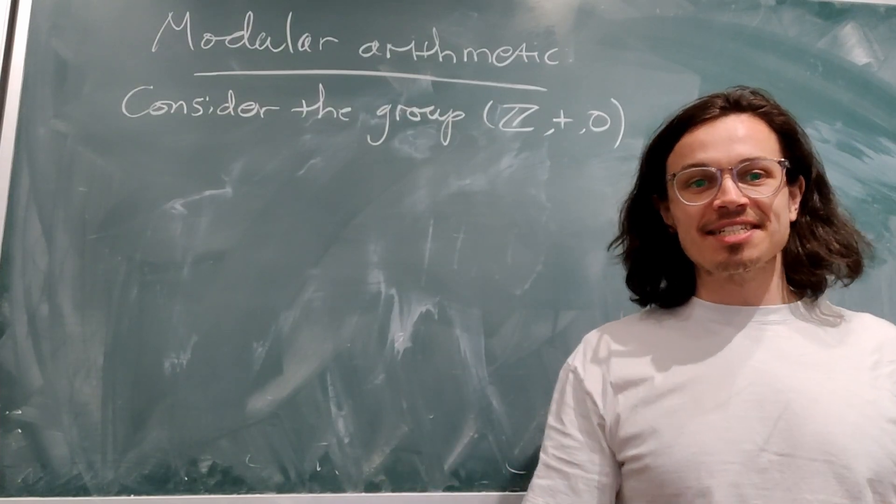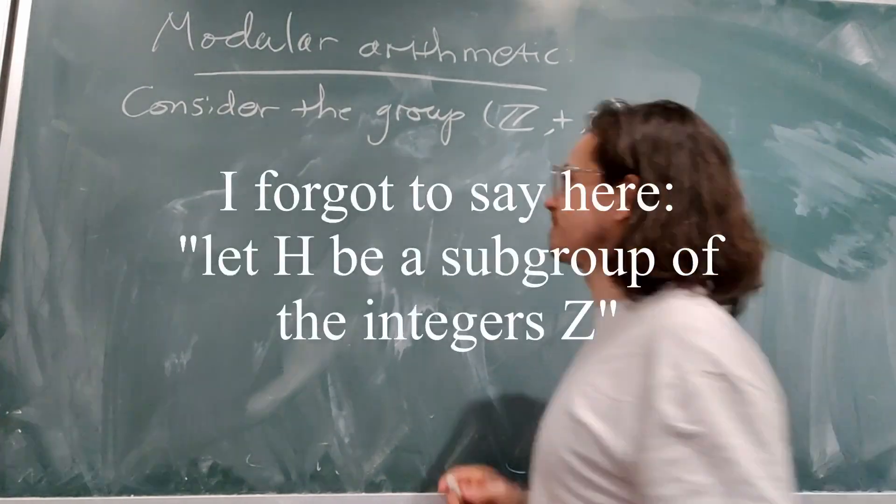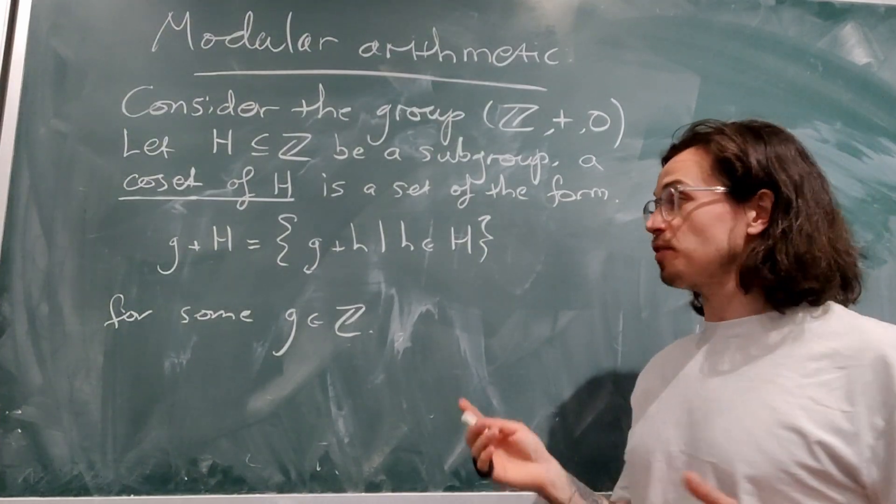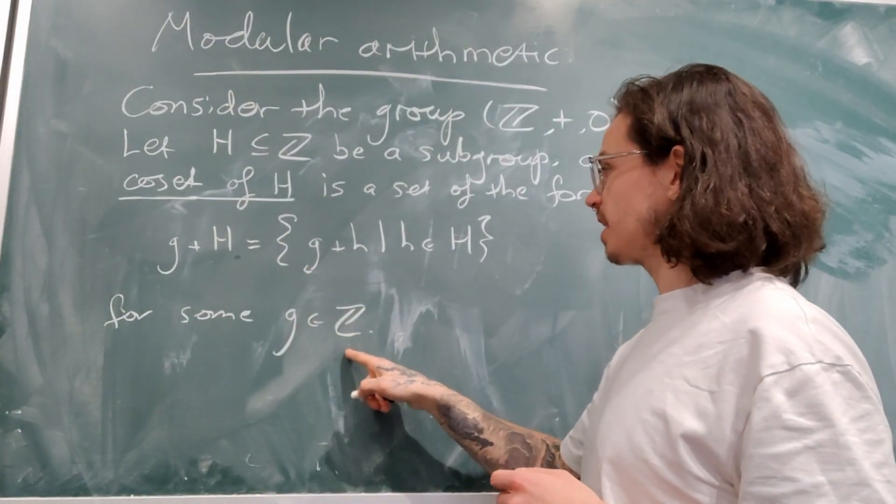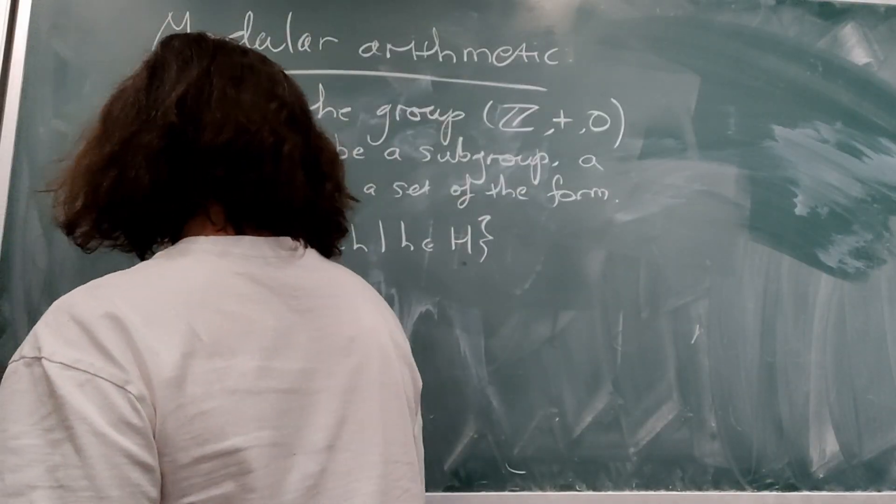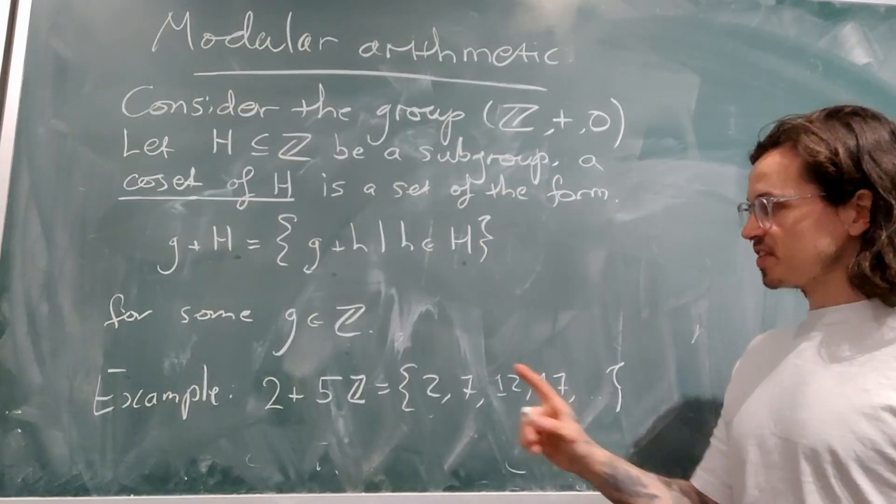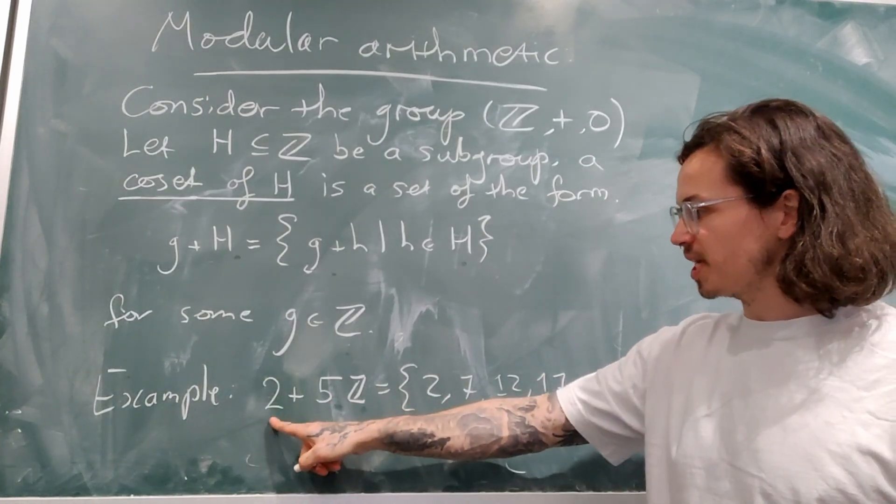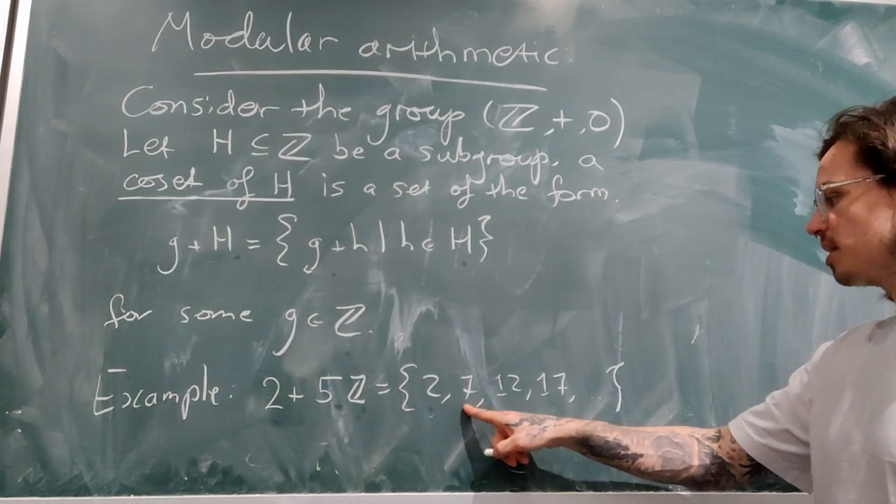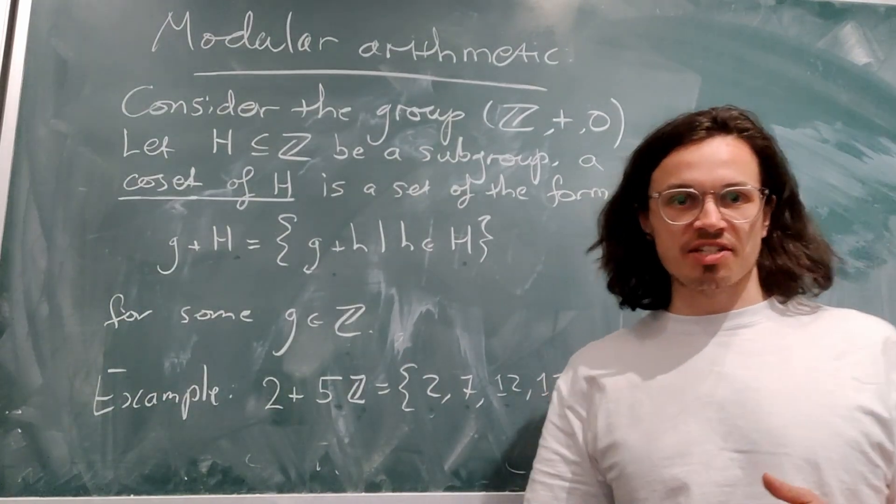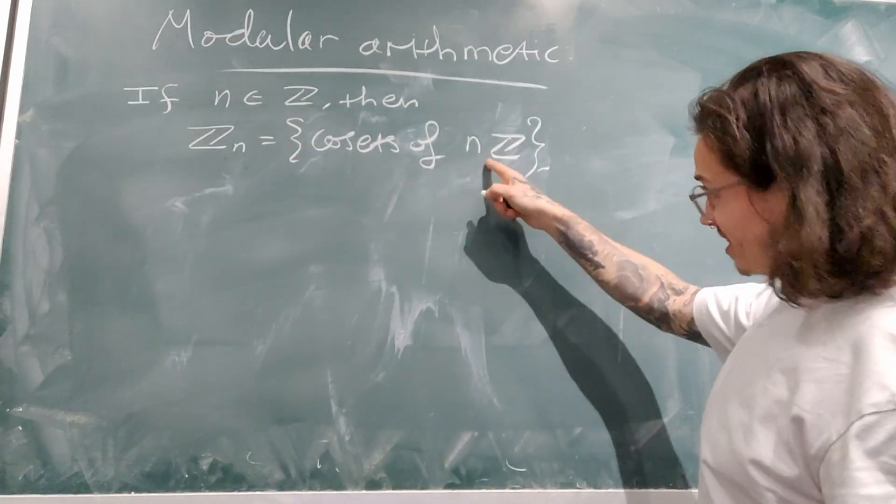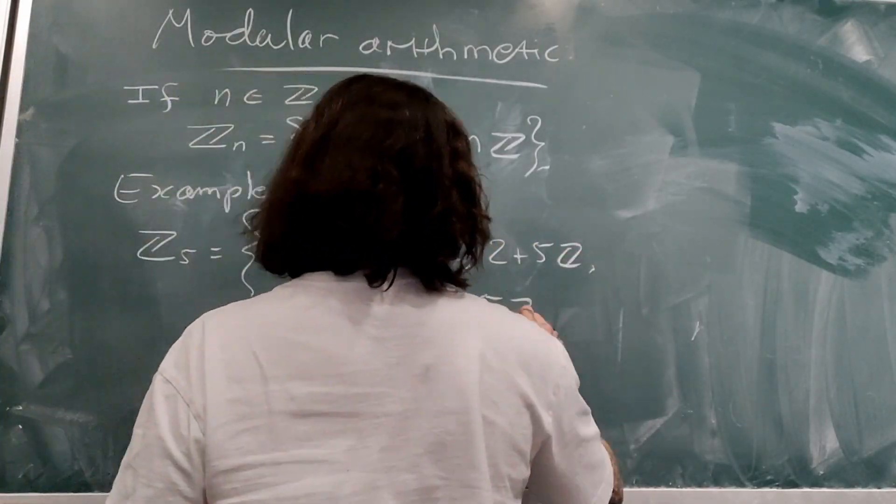We begin by considering the group given by the integers under the operation of addition with the unit 0. Then a coset of H is any set of the following form: g+H, when g is some element of the integers, where this set is defined to be equal to all of the elements g+h, given that h is an element of capital H. If n is an integer, we denote by Z_n the set of all cosets of this subgroup nZ.